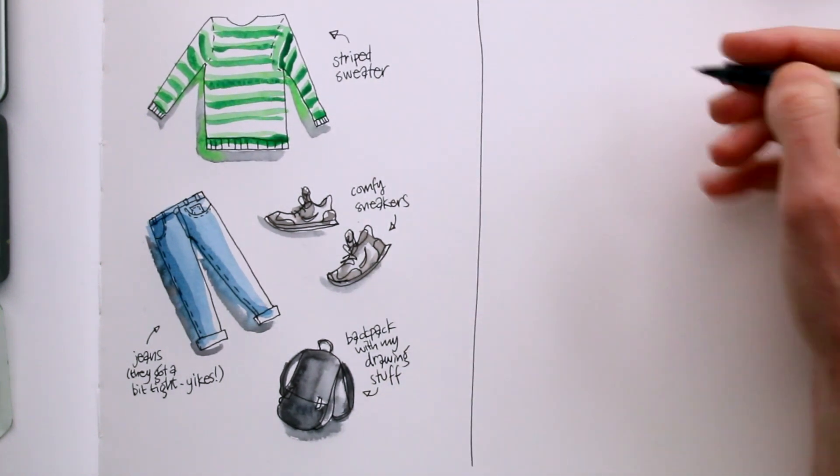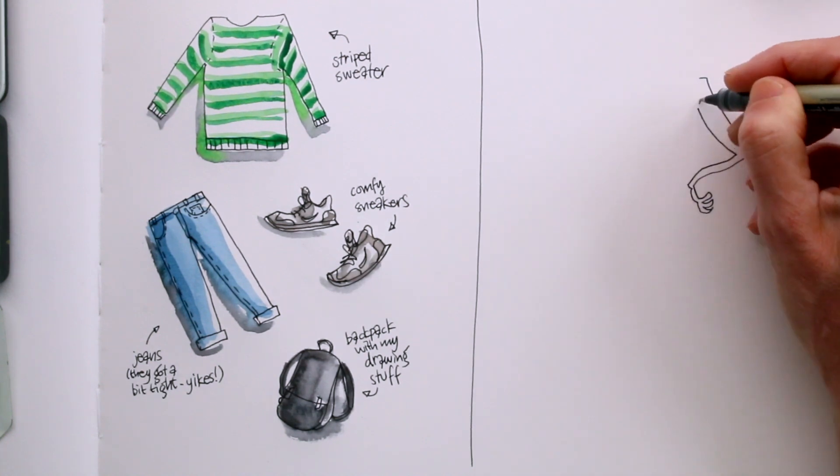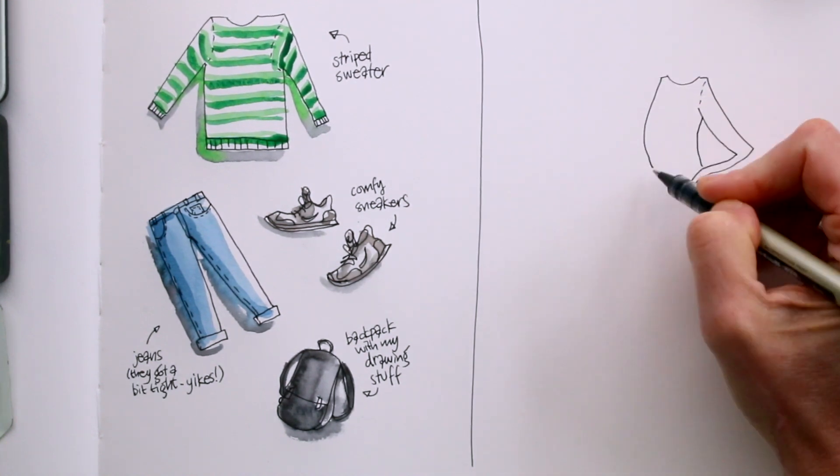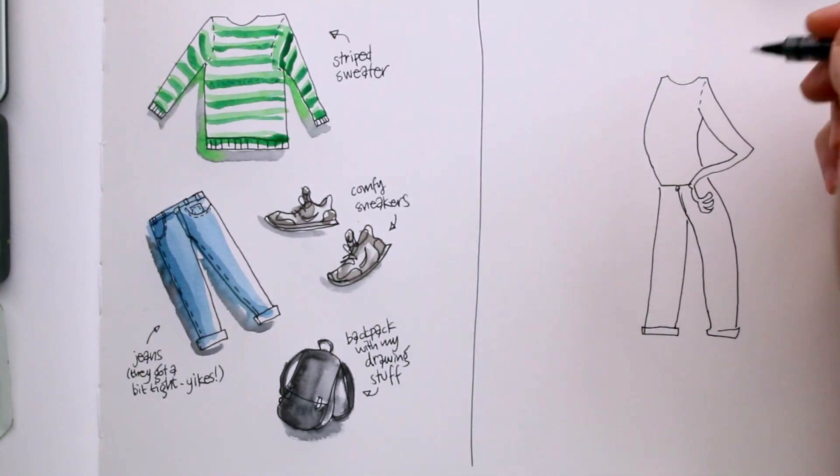Okay, so that was one approach. Just drawing each item bit by bit. But of course, you can also draw yourself wearing the clothes that you are wearing. Maybe you can create a little character of yourself.